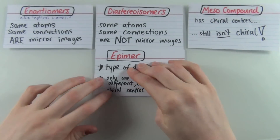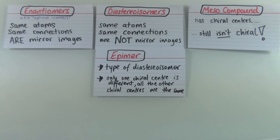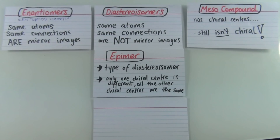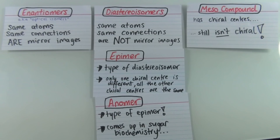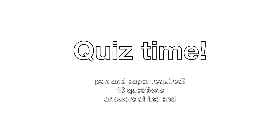So this is the bigger picture of all the slightly more challenging words we've been learning over the last few videos. We have enantiomers, diastereoisomers, and mesocompounds. Epimers are a type of diastereoisomer, and anomers are a type of epimer. Once you know what an epimer is and you see what an anomer is, you understand it — because an anomer is a very particular type of epimer that comes up in sugar biochemistry. So thank you very much for watching. Here is your last quiz of stereochemistry, and thanks for watching the playlist I've made on stereochemistry.